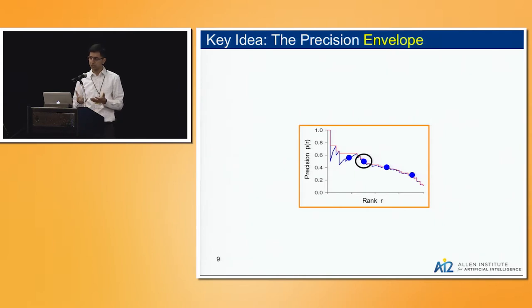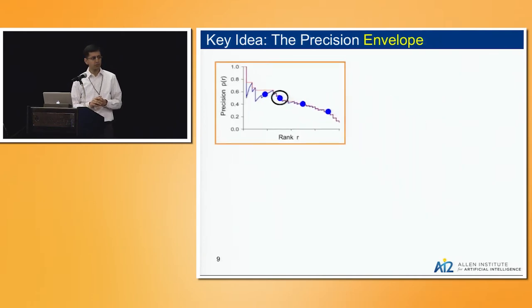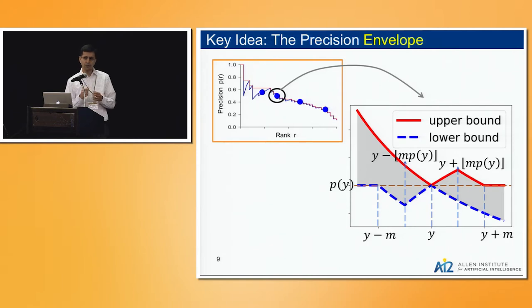For the rest of the talk, we will make this assumption and see how that fits the data. I have two slides on the actual algorithm. One is the key idea and one is how it leads to that algorithm. The idea is about this precision envelope. Let's say we are operating under this mode of identifying these blue dots, and we have identified one of these dots, the one with the black circle marked. What do we know at this point?